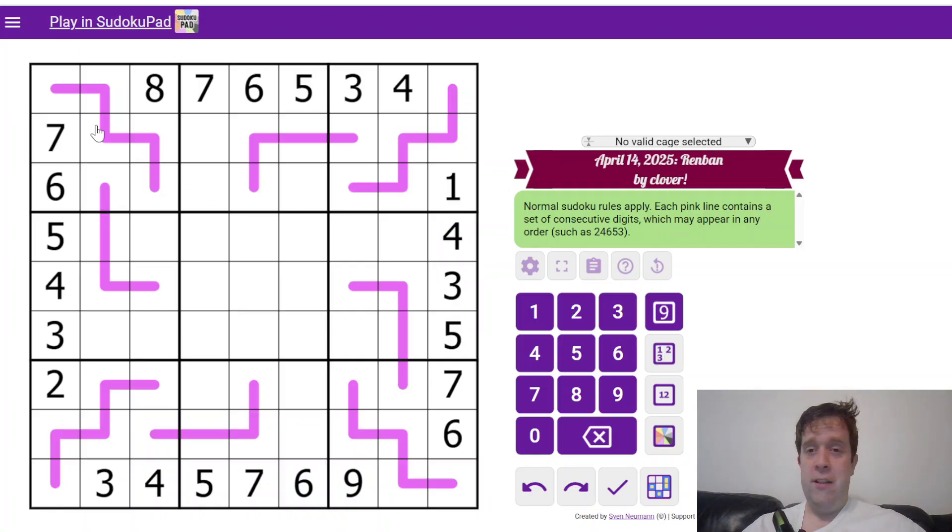This is a Renban Sudoku. Each box, row and column must contain digits one to nine once each. We have some fat pink worms - these are Renban lines. Each pink line contains a set of consecutive digits which may appear in any order, like one, two, three, four, five, something like that. That's all you need to know to solve today's puzzle. Let's get to it.